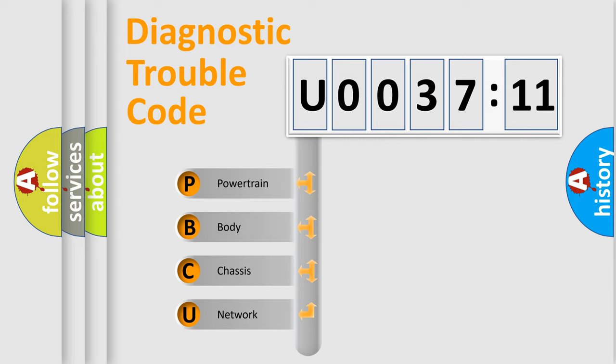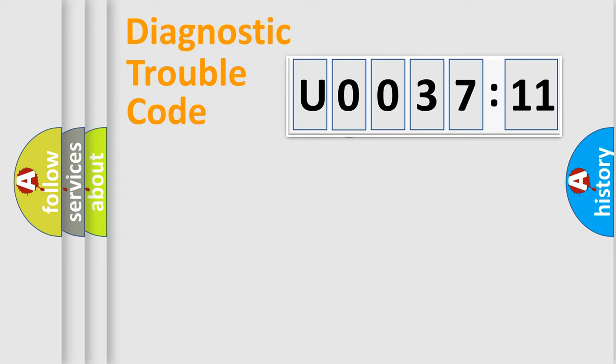We divide the electric system of automobile into four basic units: Powertrain, Body, Chassis, and Network.